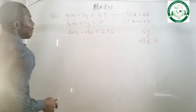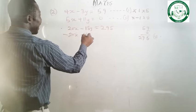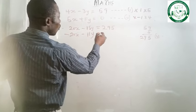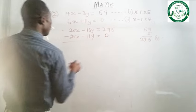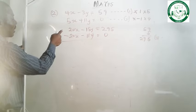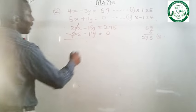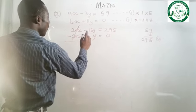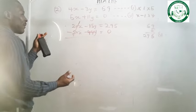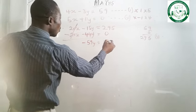For equation 2, minus 4 times equation 2 gives minus 20x minus 44y equals to 0. The two rules are now met: the x terms are both 20 and their signs are opposite (plus and minus). So the x terms cancel out. Subtracting, minus 15y minus 44y gives minus 59y equals to 295.